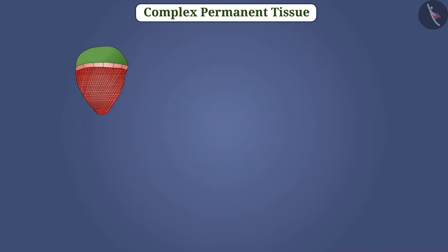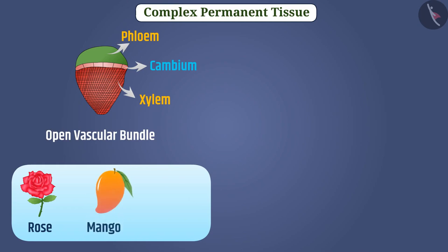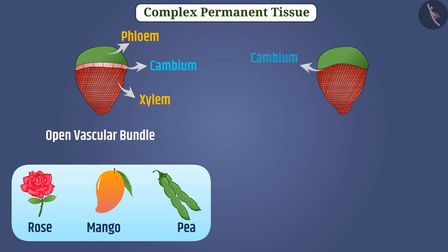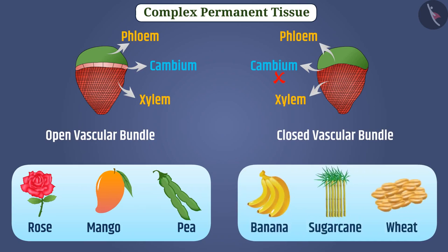A vascular bundle in which cambium is present between xylem and phloem is called open vascular bundle. For example, plants of rose, mango, and pea have an open vascular bundle. A vascular bundle in which cambium is not present between xylem and phloem is called closed vascular bundle. For example, plants of banana, sugarcane, and wheat have a closed vascular bundle.